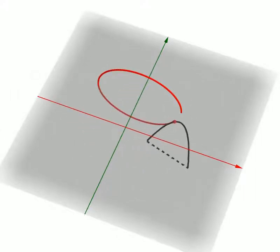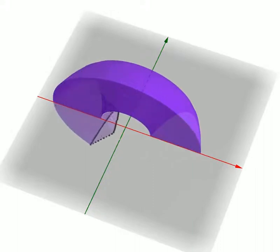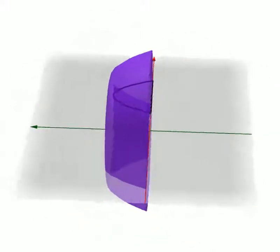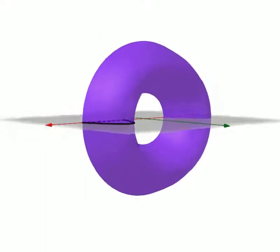Now, take a look at the path of the entire graph as it spins. It looks like a dog bowl with a hole in the bottom. My question is, what is the volume of this three-dimensional shape?